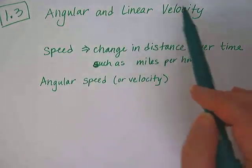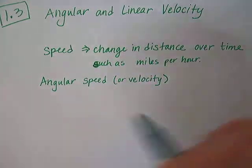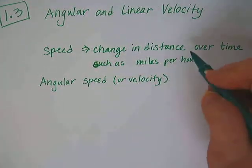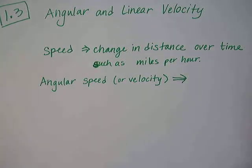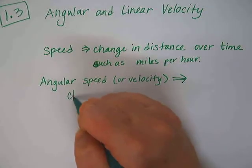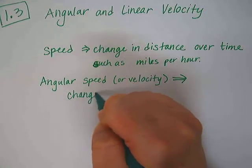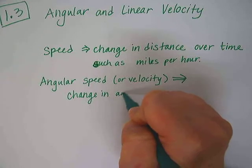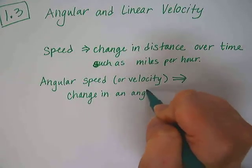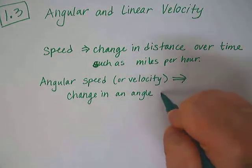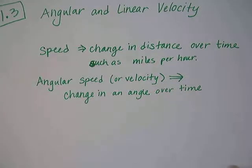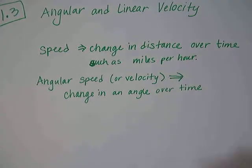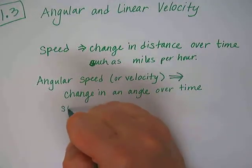But for our purposes, we're basically using the word velocity for speed. So angular speed instead of a change in distance would be what, do you think? Change in an angle, which is sort of like direction, over time. Change in an angle over time.